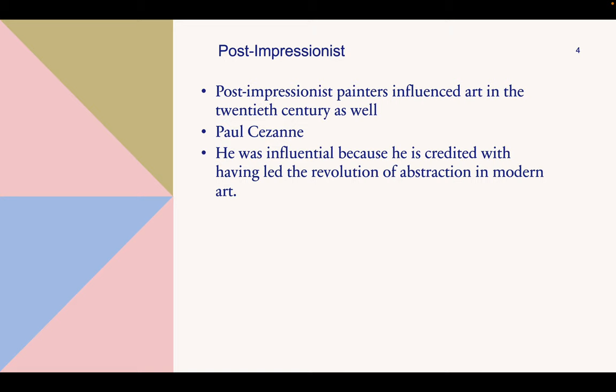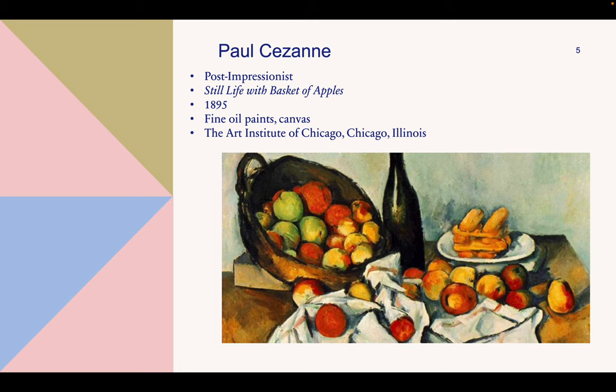In the next few slides, I will be going over Post-Impressionist painters and discussing each artist and how their paintings were influential in the 20th century. Paul Cézanne is the second artist I will discuss. He was influential because he is credited with having led the revolution of abstraction in modern art. He was not just a Post-Impressionist artist, he was also a French artist. Paul shared with Seurat an intellectual approach to painting.